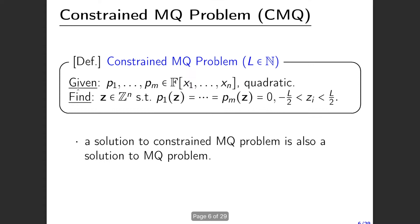In this talk, we consider another problem called the constrained MQ problem. It is very similar to the MQ problem, but its solution is constrained to a specific set — all integers between −L/2 and L/2. A solution to the constrained MQ problem is also a solution to the MQ problem.